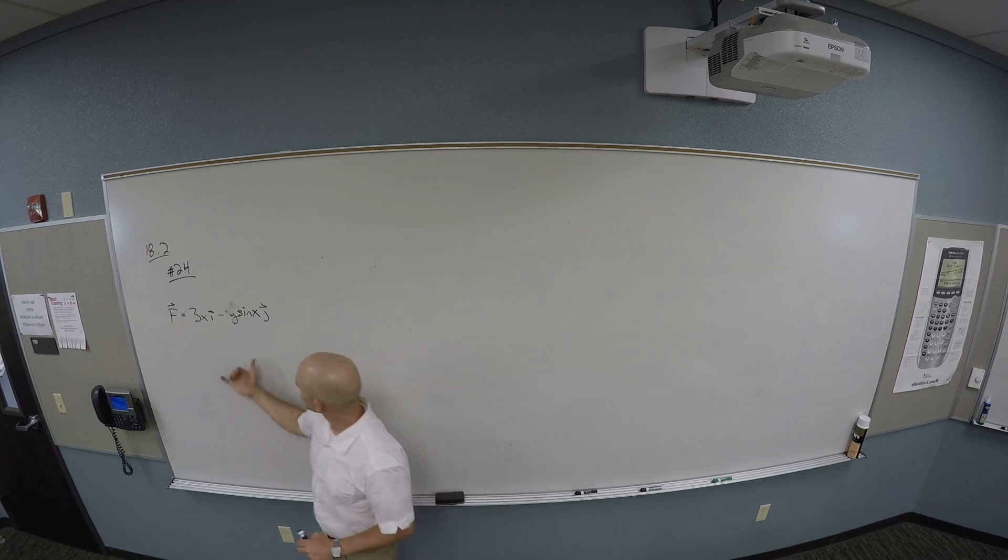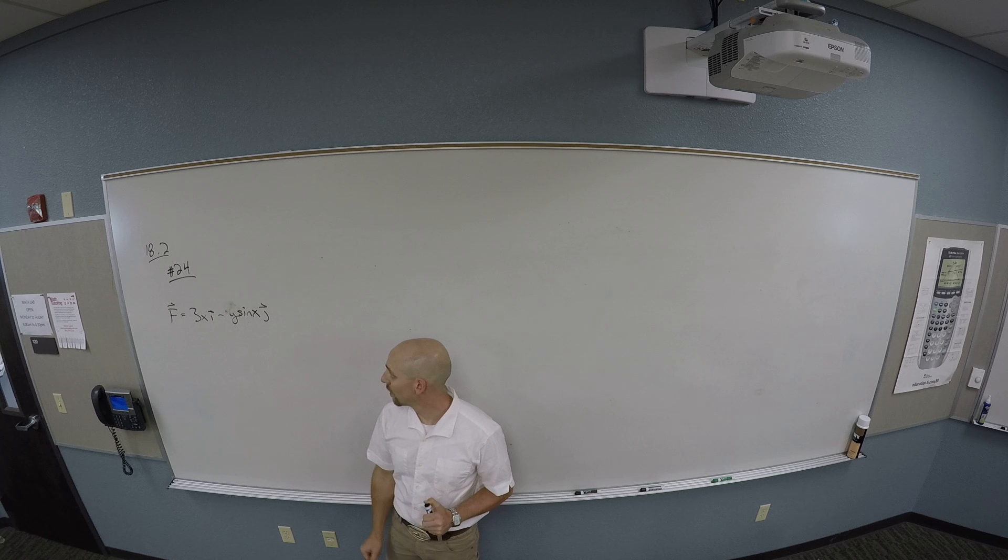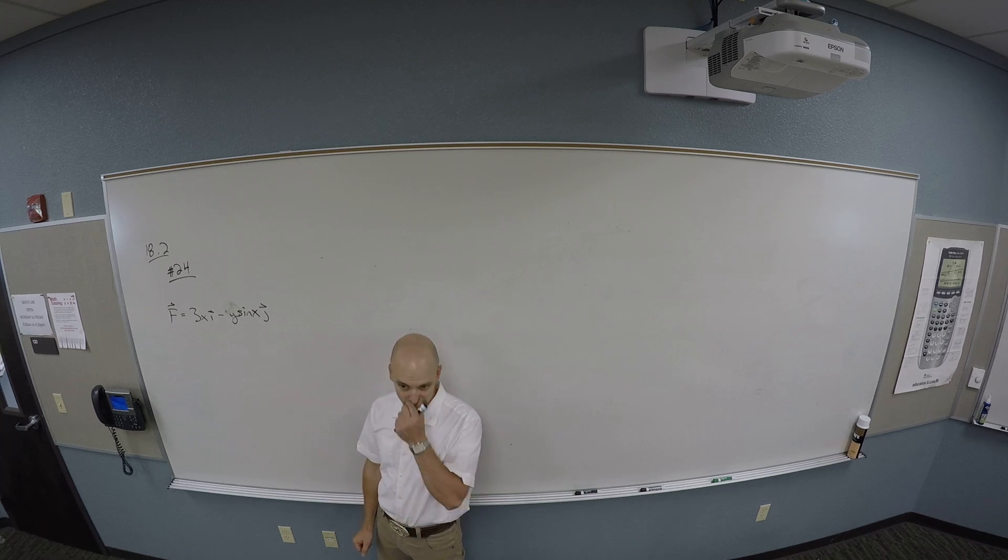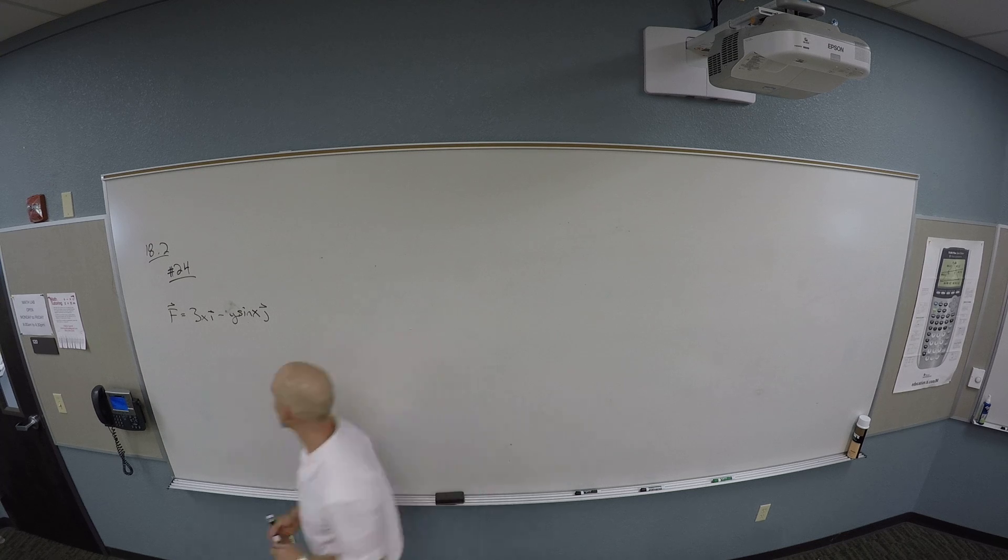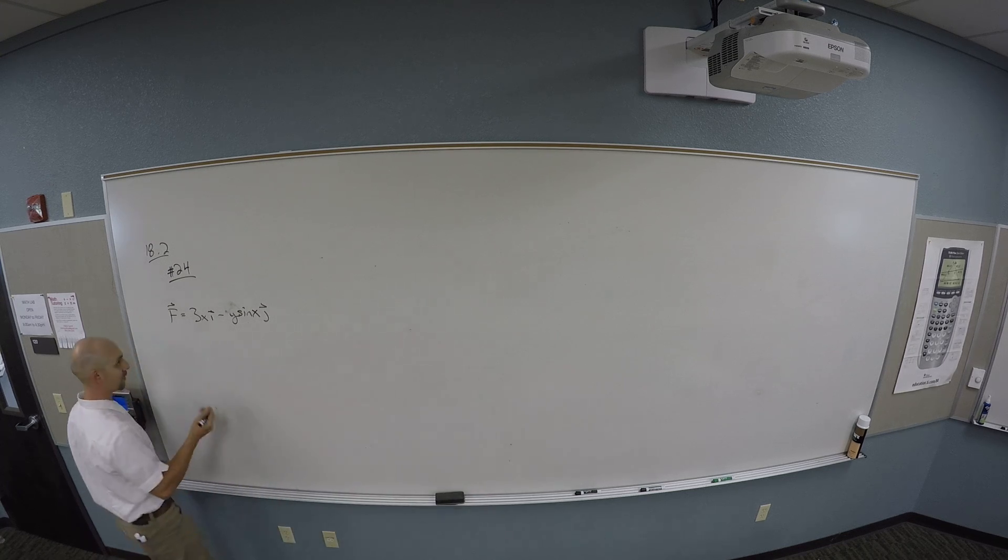So they tell me the vector field is 3xi minus y times sine x. And I have to figure out what the heck they mean by differential notation. So the idea here is not really super amazing.